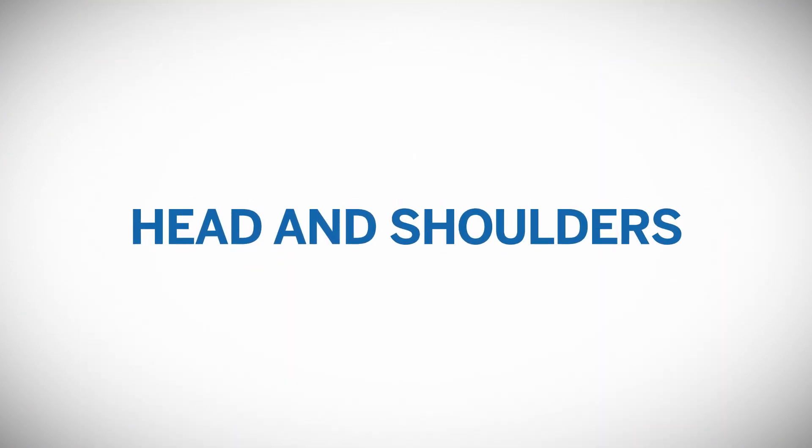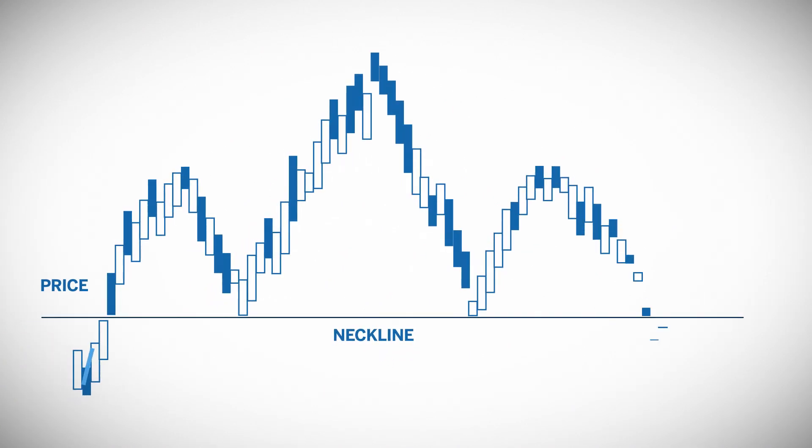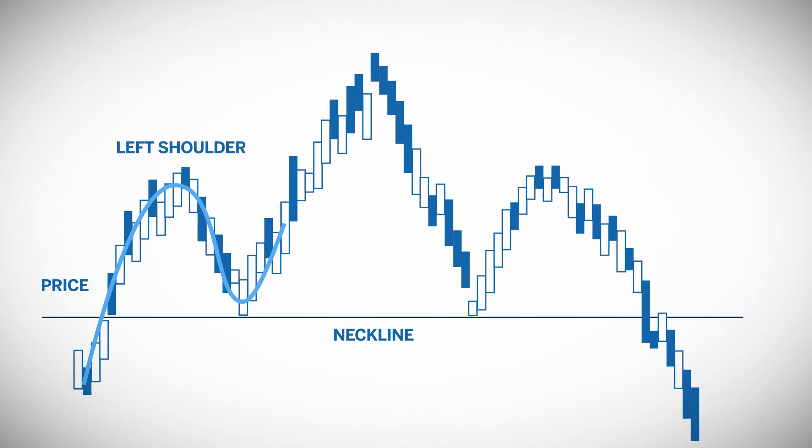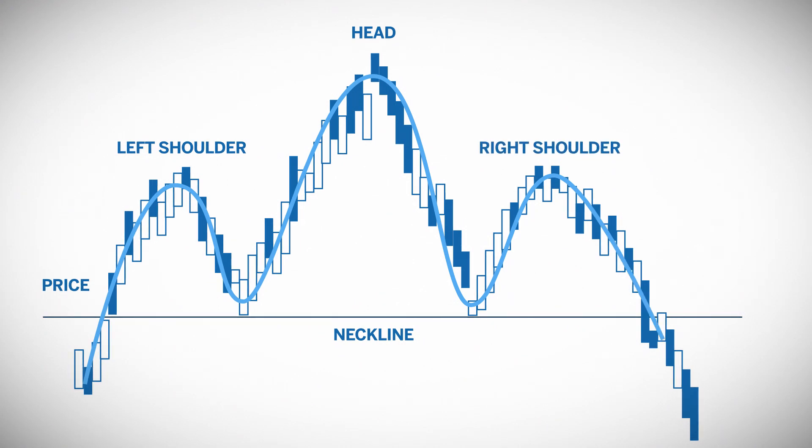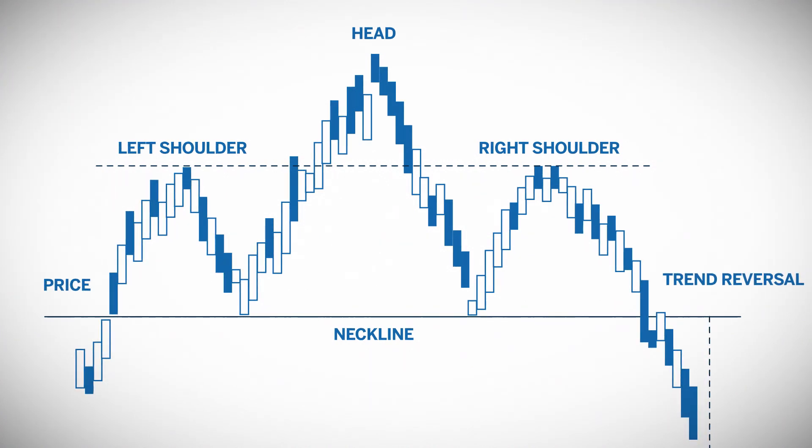Traders look to identify a head and shoulders pattern in a bullish trend. The first part of the pattern begins when the market makes a high, then pulls back, forming the first shoulder. Price will then rise again to form a higher high, then pull back. This is the head. The other shoulder will form when price retraces and makes another high around the same level as the original high. The reversal signal is usually when price breaks through the neckline and begins to push lower.